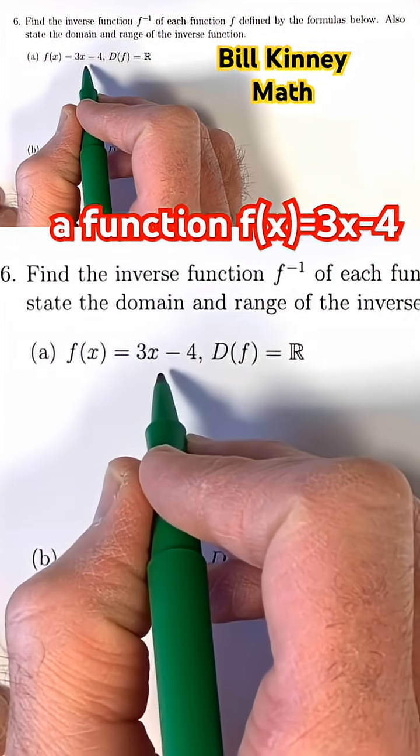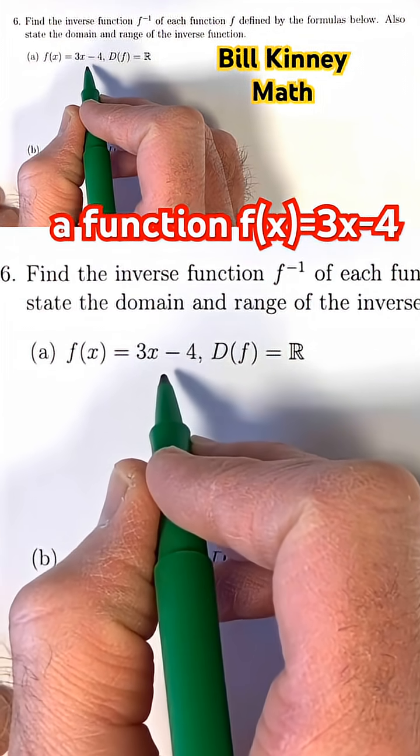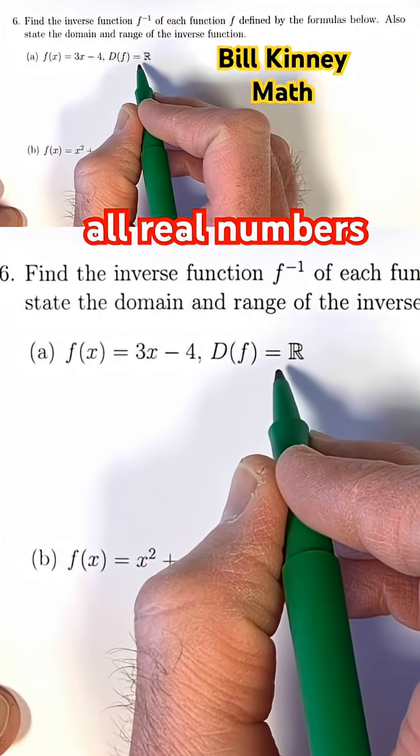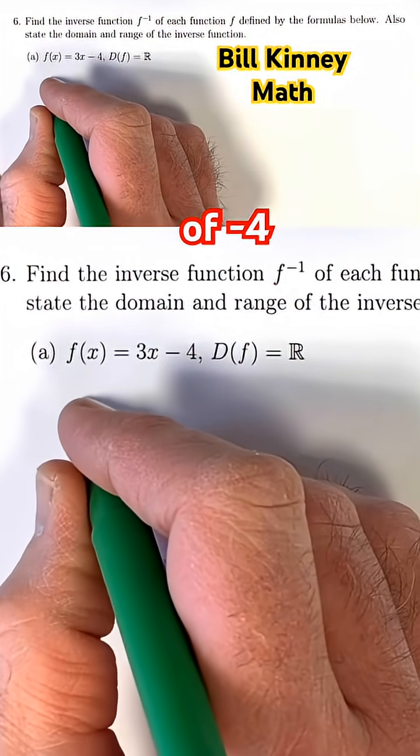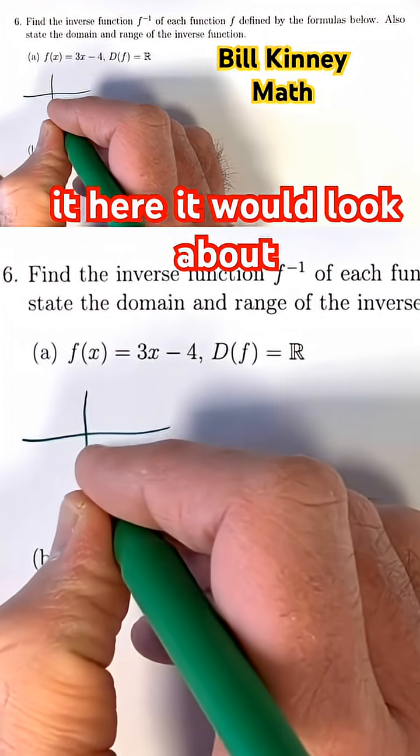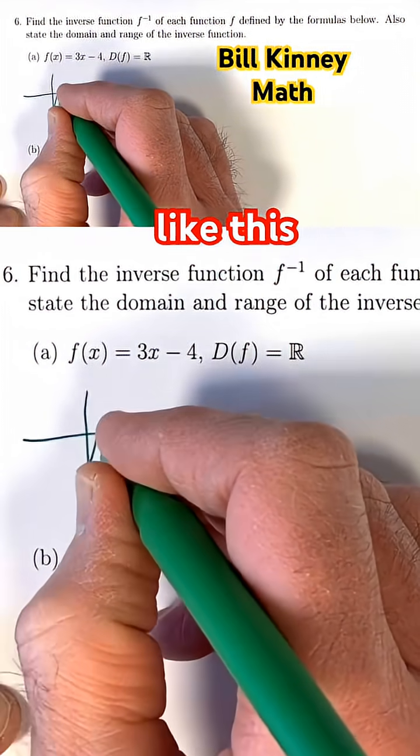Here we have a function f(x) = 3x - 4. Domain is the natural domain, all real numbers. Its graph is a line with a slope of 3 and a y-intercept of negative 4. I will quickly sketch it here; it would look about like this.